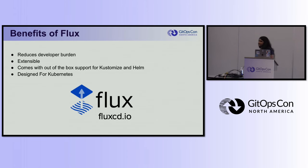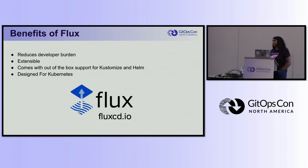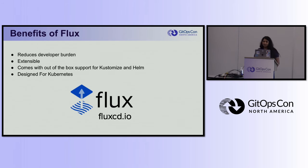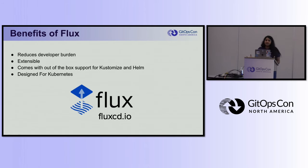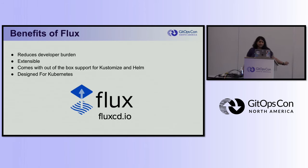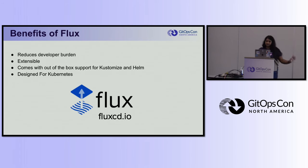What are the benefits of Flux? Flux allows you to reduce developer burden — you don't have to be at work on a weekend dealing with some manual deployment process, because everything's done through automated processes. It's also extensible, very modular and lightweight, so you can pick and choose the experience you want. It comes with out-of-the-box support for Kustomize and Helm, and it was designed completely for Kubernetes, so it works with pretty much any setup you already have.